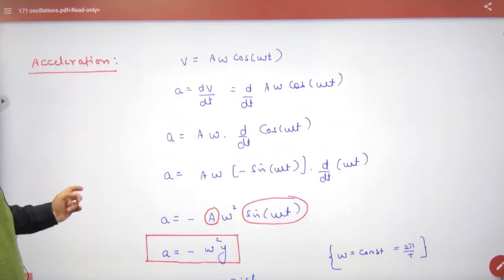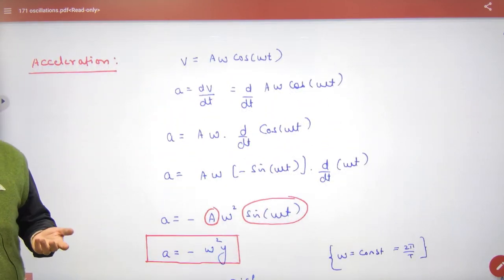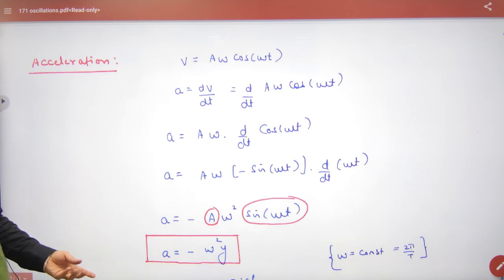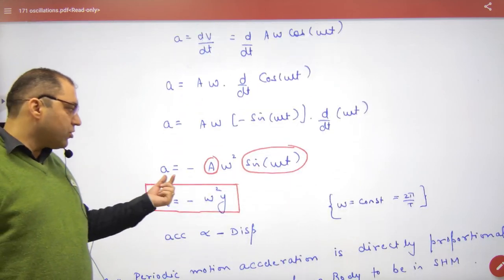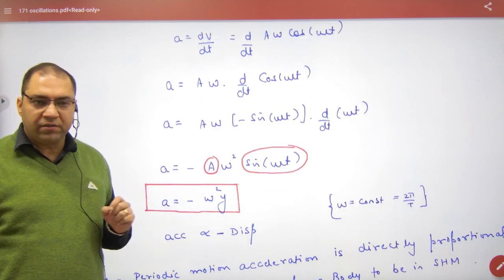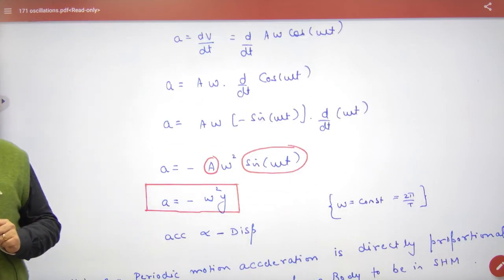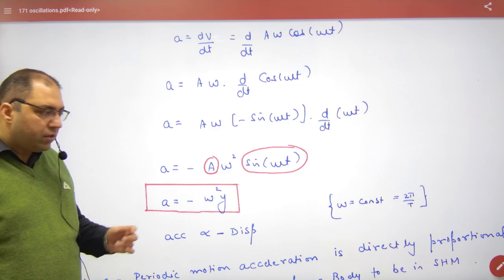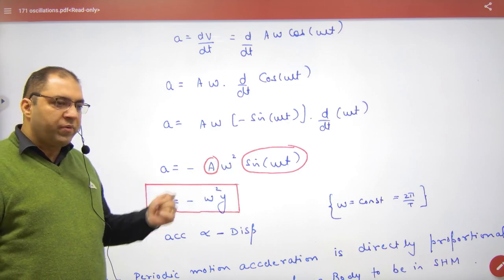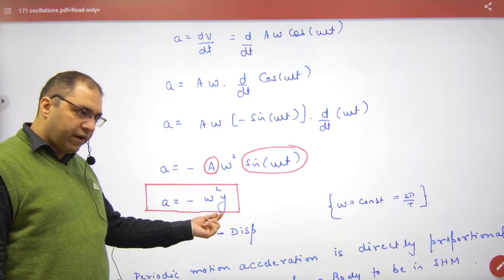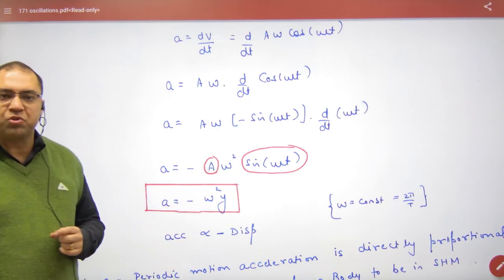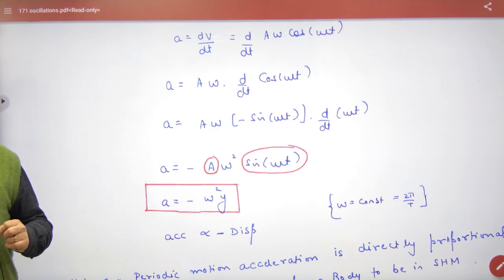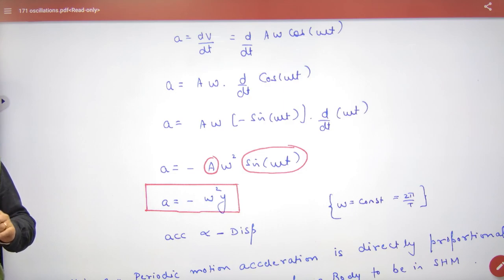Then we have seen acceleration. The acceleration formula is minus a·ω²·sin(ωt). Since sin(ωt) equals y/a, the acceleration formula simplifies to minus ω²·y.